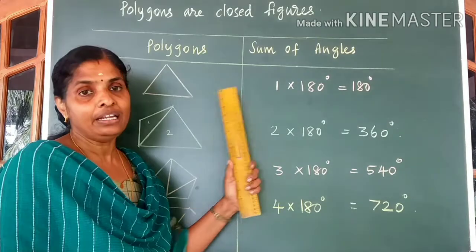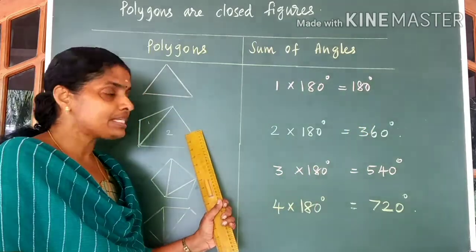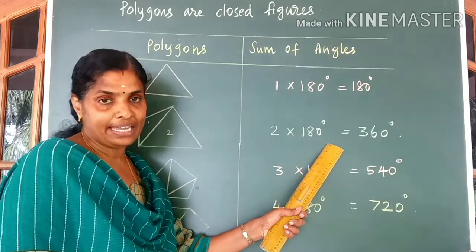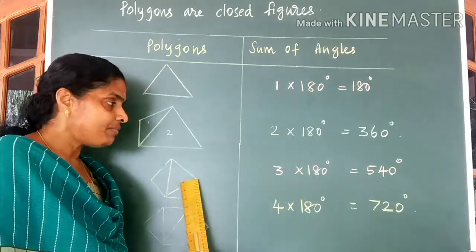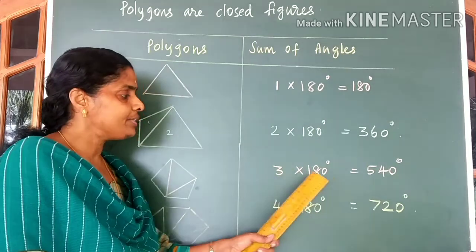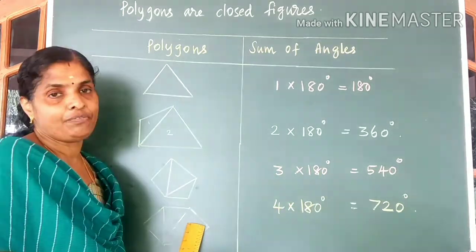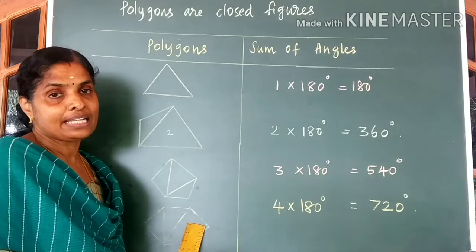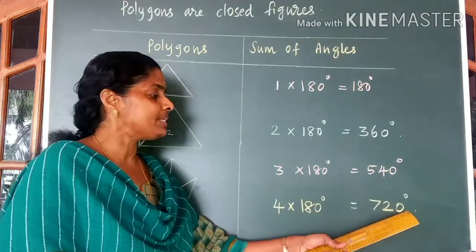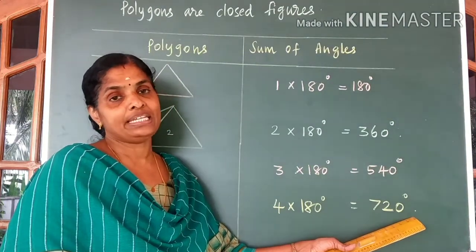Hope you understood about the sum of angles. For a triangle it is 180 degrees. For a four-sided figure it is 2 into 180 degrees. For a five-sided figure it is 3 into 180 degrees. For a six-sided figure, the sum of angles is 4 into 180 degrees, which is equal to 720 degrees.